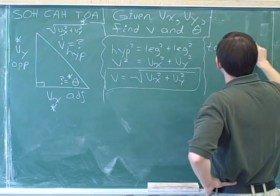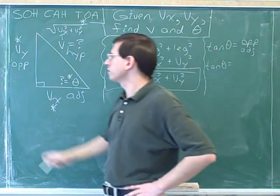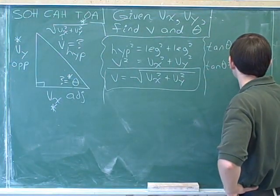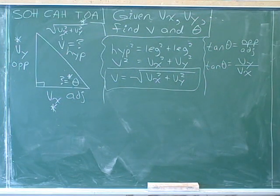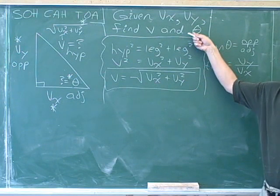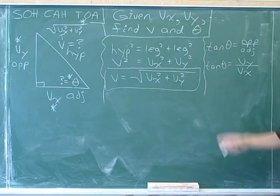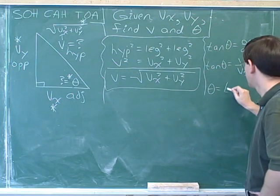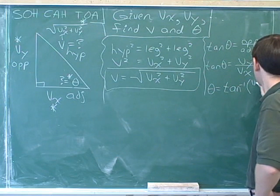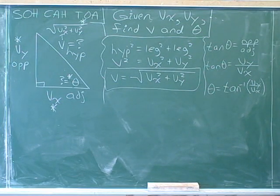The tangent of theta equals the opposite side over the adjacent — TOA. The opposite side is v sub y, and the adjacent side is v sub x. We need to get theta by itself, so we take the inverse tangent to get rid of the tangent. The opposite of a tangent is an inverse tangent. Taking the inverse tangent of both sides gives: theta equals inverse tangent, or arc tangent, of v sub y divided by v sub x.